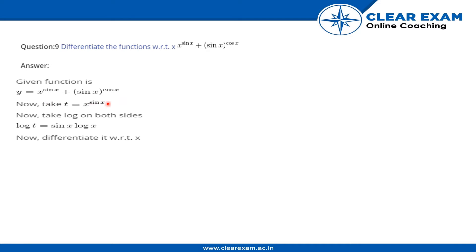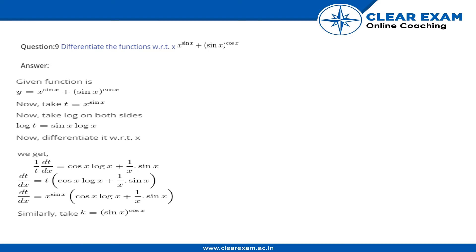Take the first term to be equal to t, hence t equals x to the power sine x. Take natural logarithm on both sides, hence we get log t equals sine x into log x. Differentiating both sides with respect to x, we get 1 by t dt by dx equals — apply product rule to solve the differentiation of the RHS.